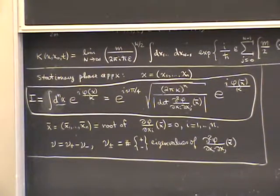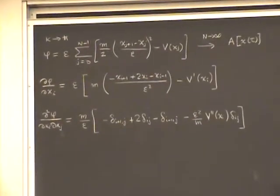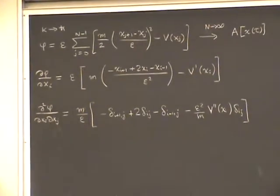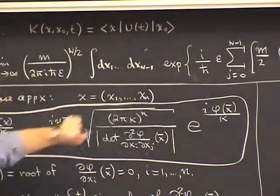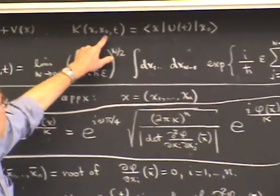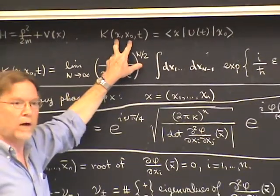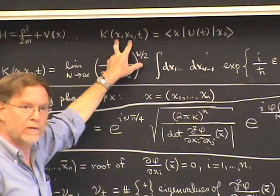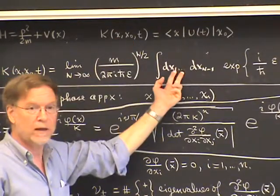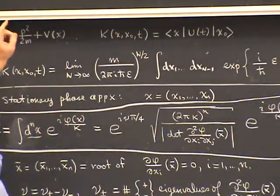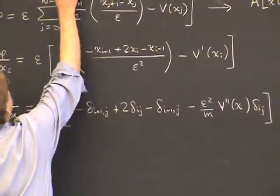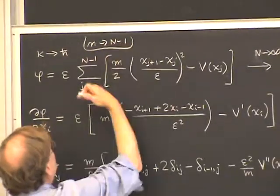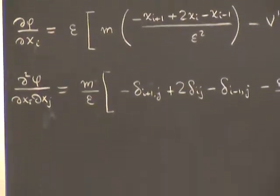Taking derivatives of phi with respect to the x's — note that in the mathematical formula x goes from 1 to lowercase n, but in the path integral the x's go from 1 to capital N minus 1. Remember that x_0 and x_N, which is the same as x, are fixed parameters of the propagator and not variables of integration. We only integrate over intermediate points from 1 to N minus 1. We will also take n to N minus 1 when converting this mathematical formula to the path integral application.